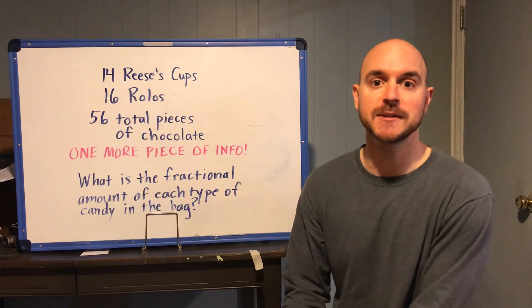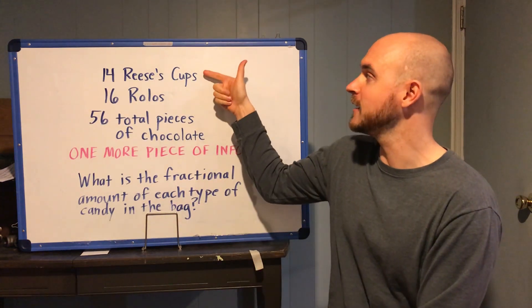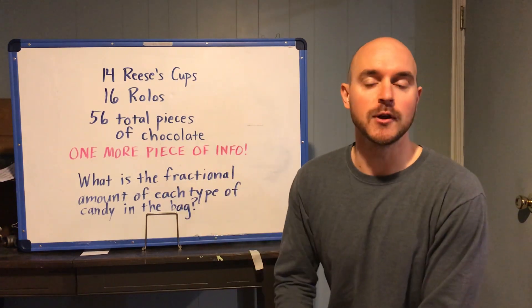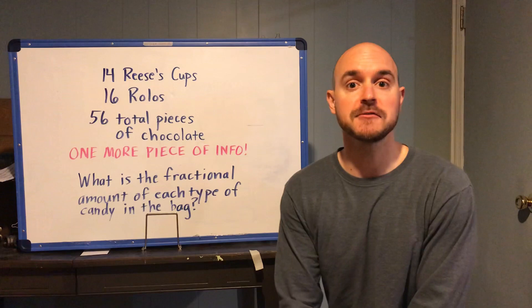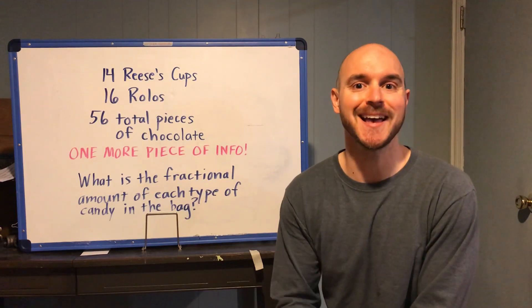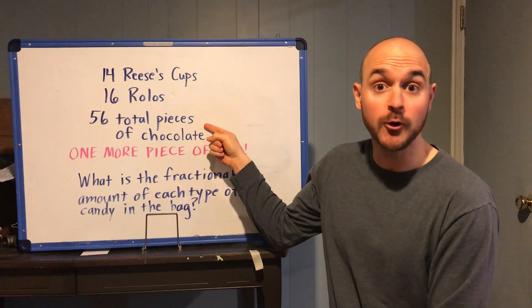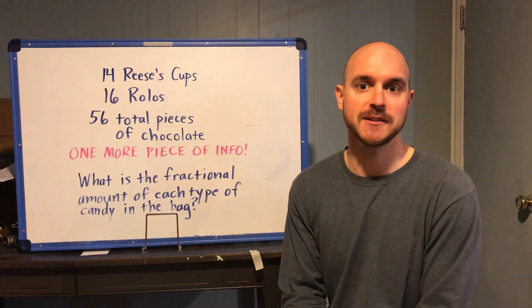The information on the website tells us in that bag of candy there are exactly 14 Reese's cups. There are 16 Rolos and the other piece of information that we learned today is in the bag. In total there are 56 pieces of chocolate.